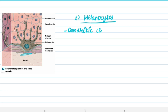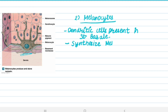The next type of cells are melanocytes. Melanocytes are dendritic cells present in stratum basale, at the basement membrane. They synthesize melanosomes which contain melanin. There is a ratio of 36 keratinocytes per 1 melanocyte.